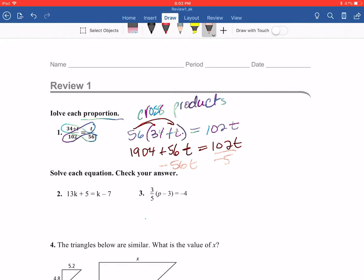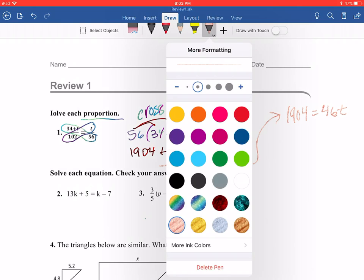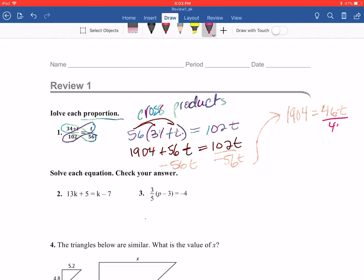So I'm going to subtract 56T from both sides and I'm going to rewrite this over here. So this is going to become 1,904 is equal to 102 minus 56. It's having calculator issues. 46T. Now I'm going to divide both sides by 46. So that becomes 1. So then that's going to become T is going to be equal to—now that will reduce.